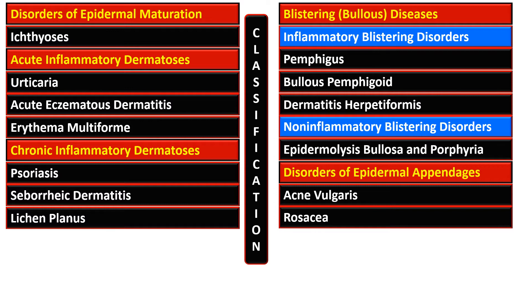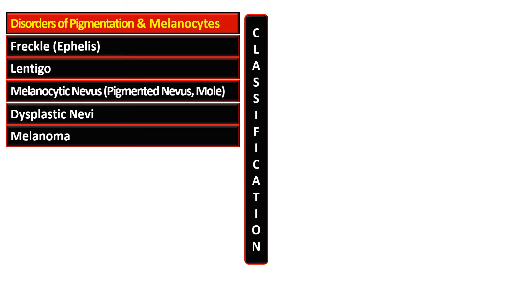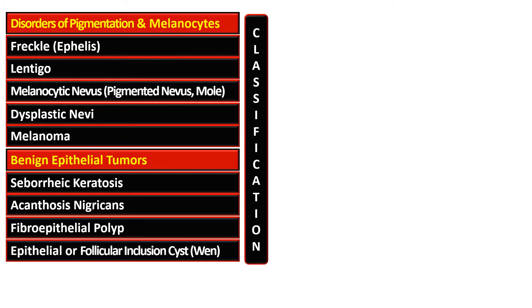The disorders of epidermal appendages are acne vulgaris and rosacea, while the panniculitis includes erythema nodosum, erythema induratum, and other types. The disorders of pigmentation and melanocytes are freckles, ephelis, lentigo, melanocytic nevus, dysplastic nevus, and melanoma.